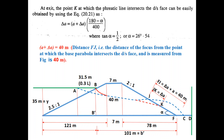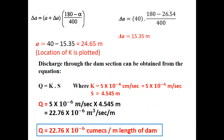From the diagram, point J on the downstream has been located by constructing the phreatic line. We can measure FJ = delta a + a = 40 m. So a + delta a = 40 m. Substituting into the equation: delta a = 40 × (180 − 26.54) / 400.